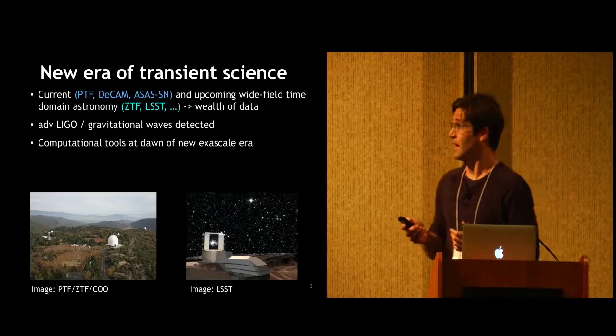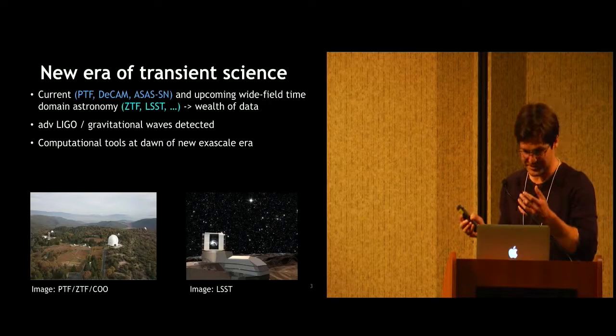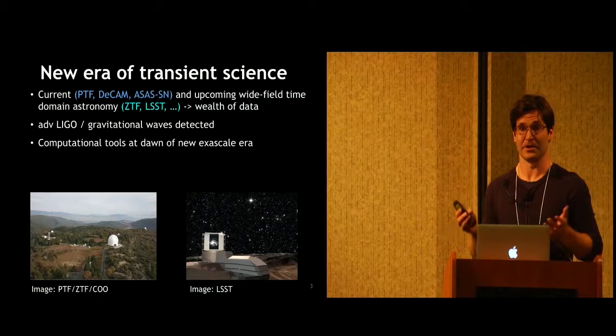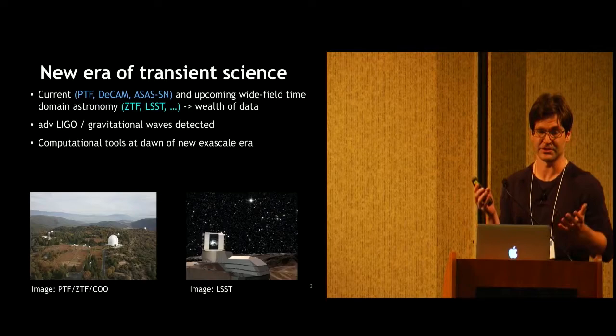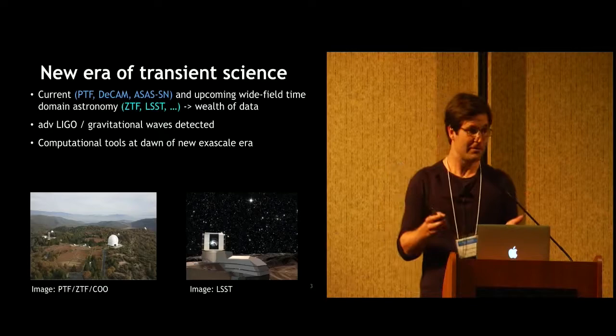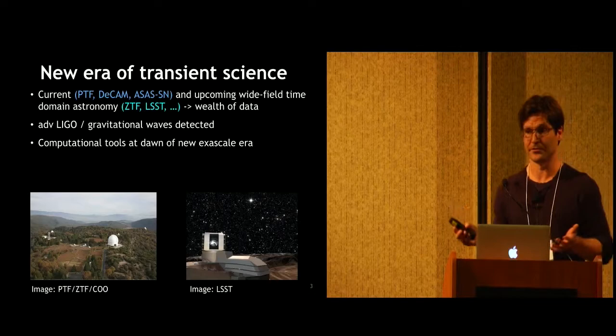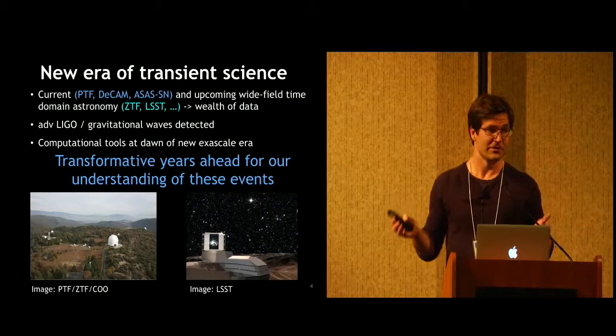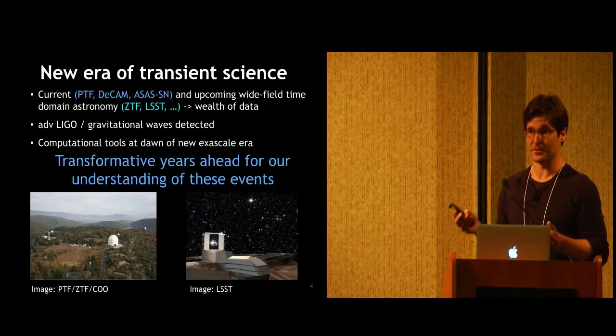On top of that, we're in really an era of unprecedented incoming observational data. So we have a lot of wide field time domain astronomy surveys operating currently and being upgraded for future operations that are delivering a wealth of observational data that are challenging the transient models that we currently have established. On top of that, Advanced LIGO has detected gravitational waves which open a new window into the universe and how we can observe these transient events. At the same time, the computational tools are really at the dawn of the exascale era so that if we combine all of this knowledge and all of the new tools that we have available, we can really make use of all this data and we have transformative years ahead of our understanding of these events.